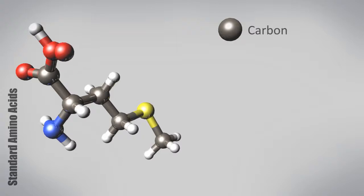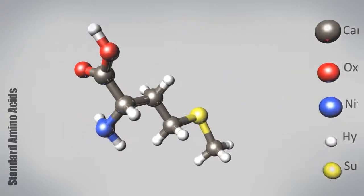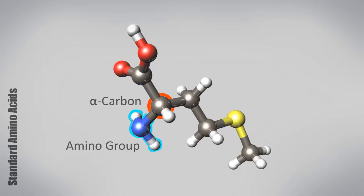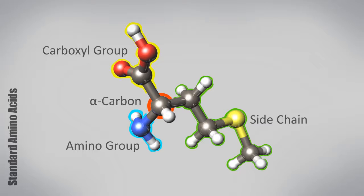Amino acids are made of carbon, oxygen, nitrogen, hydrogen, and sulfur atoms. These atoms form an amino group, a carboxyl group, and a side chain attached to a central carbon atom. The side chain is the only part that varies from amino acid to amino acid and determines its property.